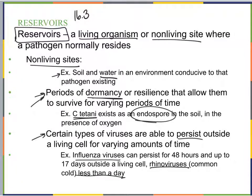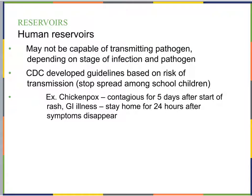In addition to non-living sites, we also have living reservoirs. One example is human reservoirs. A human may or may not be capable of transmitting a pathogen — it depends on the stage of infection and the pathogen itself. Some pathogens prefer to be in humans and transmit themselves to other humans so they can continue living there. The CDC developed guidelines based on the risk of transmission to help prevent spread, especially among school children.